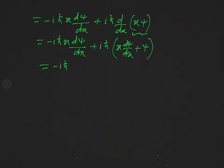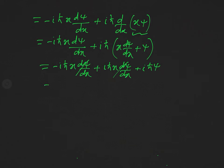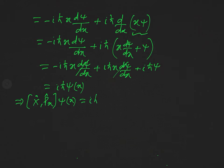So we have minus iħ x(dψ/dx) plus iħ x(dψ/dx) plus iħ·ψ. The two terms minus iħ x(dψ/dx) and plus iħ x(dψ/dx) cancel out, and our result is iħ ψ(x).